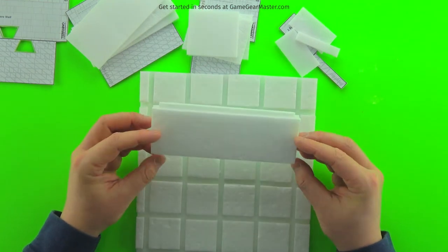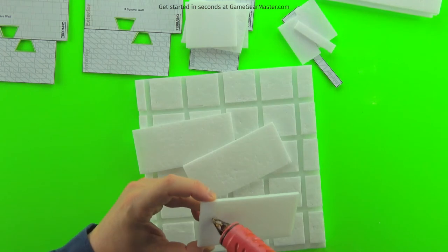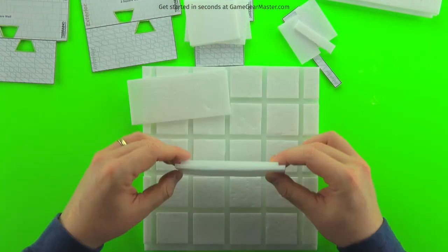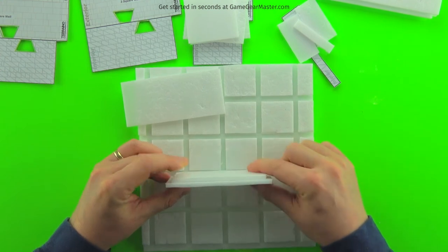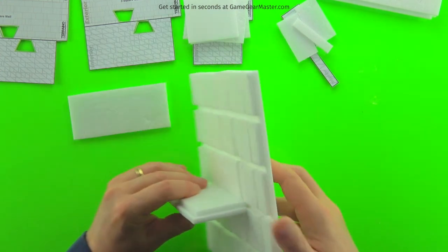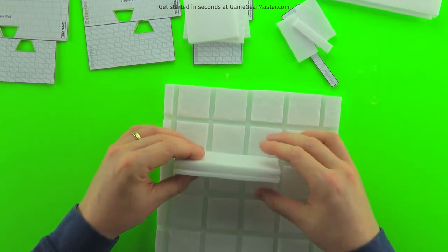There you go. One finished four square wide wall. And the procedure is the same for each one of the walls. Glue on the center piece. Make sure the sides are even. Check the depth of the tongue and then add the other side and you're done.